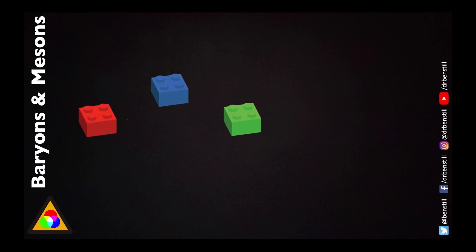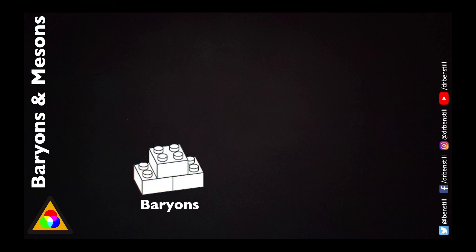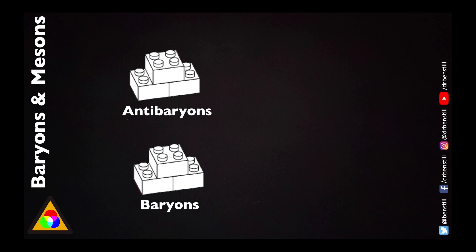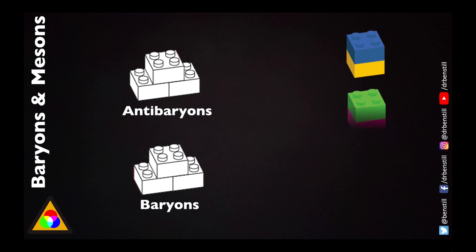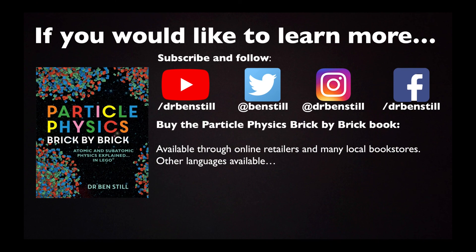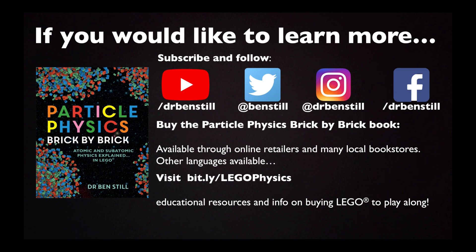In summary, neutrality in colour charge means we can create stable particles. We can achieve colour neutrality by mixing a red, a green and a blue quark to form a baryon, or by mixing three anti-quarks with yellow, cyan and magenta anti-colours to create an anti-baryon, or by mixing a quark and antiquark together to form a meson. Thanks for listening — if you'd like to know more, subscribe to the YouTube channel or follow on social media. The book Particle Physics Brick by Brick is available through online retailers and many local bookstores in multiple languages, and educational resources and Lego information are available via the provided link.